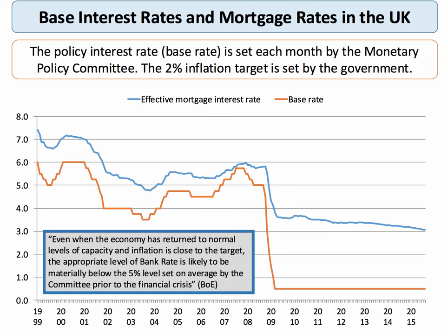Here's a quote from Mark Carney, talking about whether the base rate would ever go back to the 5% level seen in 2008. He said: 'Even when the economy has returned to normal capacity and inflation is close to target, the appropriate level of bank interest rates is likely to be materially below the 5% level set on average by the MPC prior to the crisis.' In other words, we are probably in a new era where policy interest rates will stay very low — possibly rising from 1% to 2%, but the new normal could be 2% to 3% maximum.